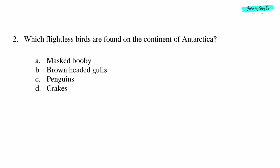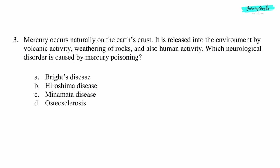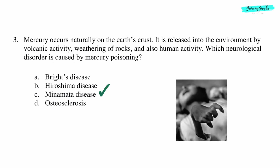Question 2: Which flightless birds are found on the continent of Antarctica? Option C: Penguins. Question 3: Mercury occurs naturally in the earth's crust. It is released into the environment by volcanic activity, weathering of rocks, and also human activity. Which neurological disorder is caused by mercury poisoning? Option C: Minamata disease.